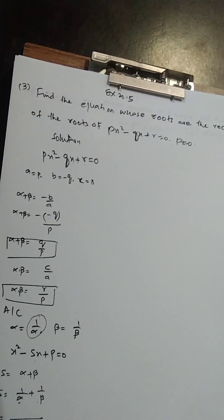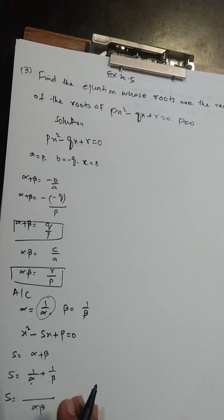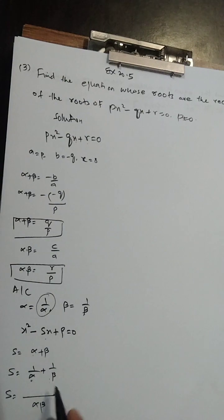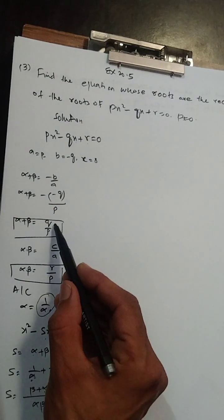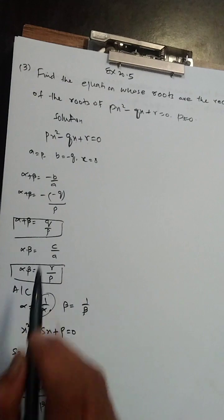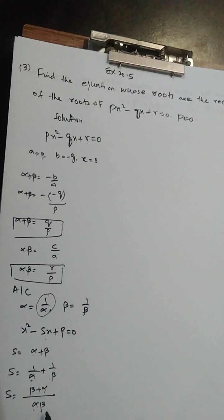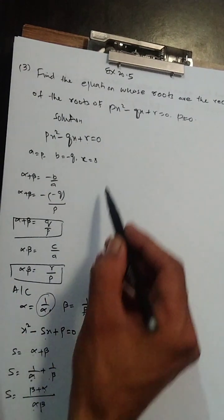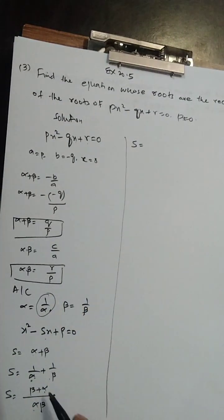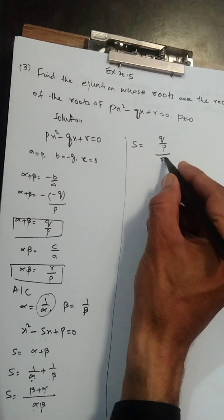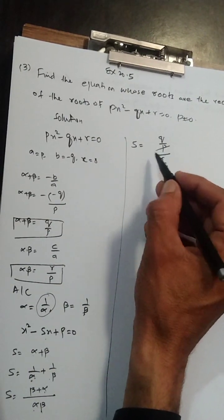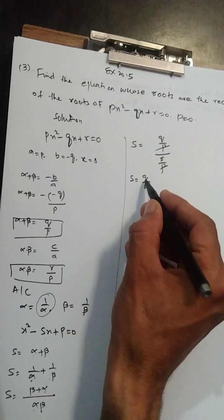Cross multiply mein: 1 ko beta se multiply karein to beta aayega, 1 ko alpha se multiply karein to alpha aayega. Toh alpha + beta upon alpha×beta. Alpha + beta ki jagah q/p rakhenge aur alpha×beta ki jagah r/p rakhenge. S (sum) = (q/p) / (r/p), P/P cancel hoga, sum = q upon r.